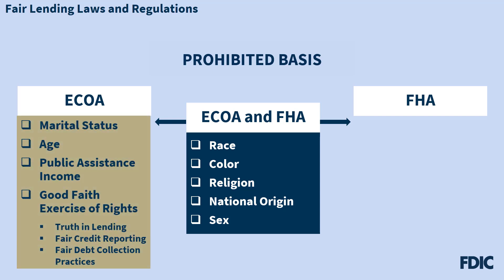ECOA also prohibits discrimination based on familial status and disability. The FHA prohibits discrimination based on familial status and disability, which is referred to in the statute as handicap.